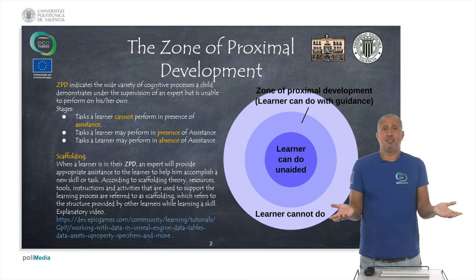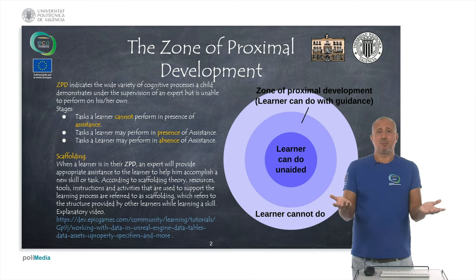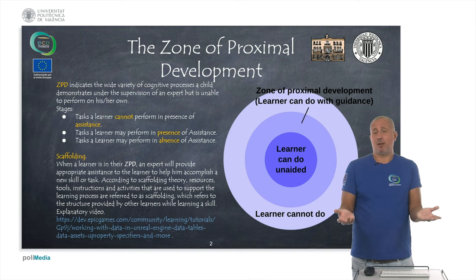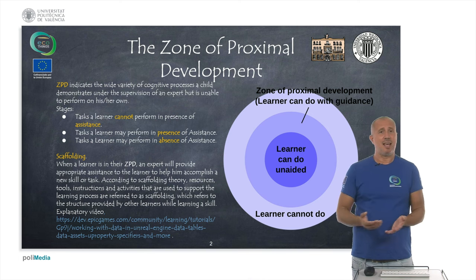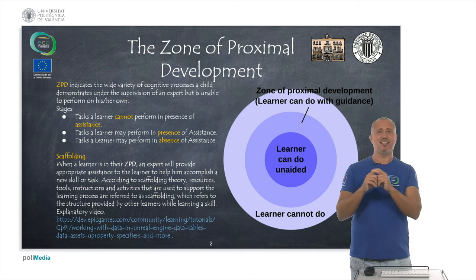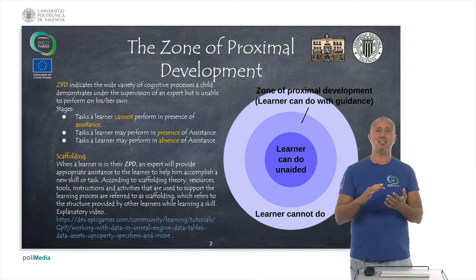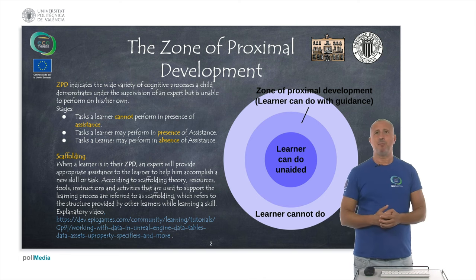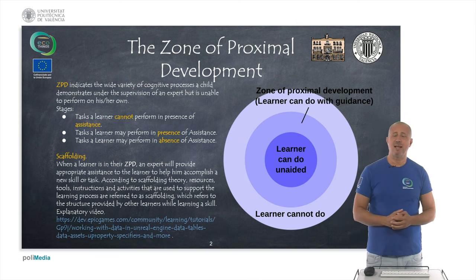If we work with an adult and ask him to swim, he will tell you, 'I already know how to swim.' He will just enter the sea and swim. So he is inside the inner part of the circle — he already masters that. The same happens with basketball.